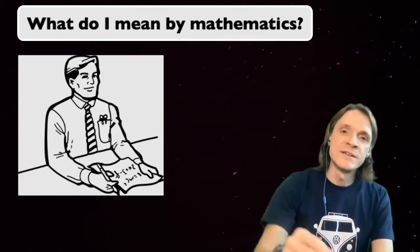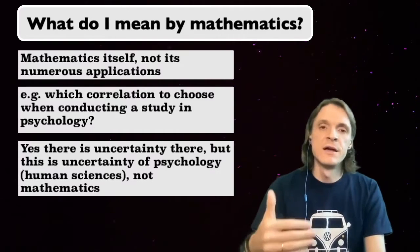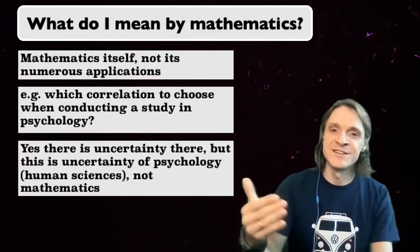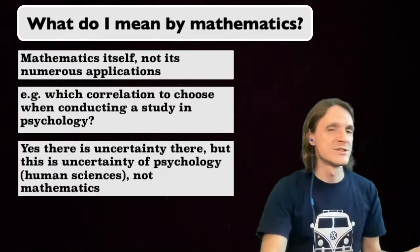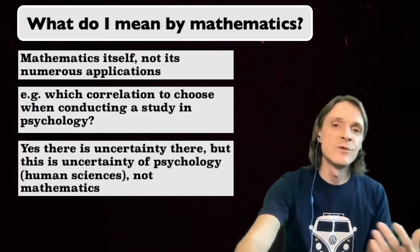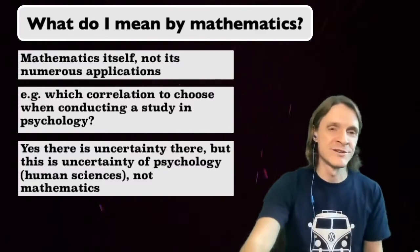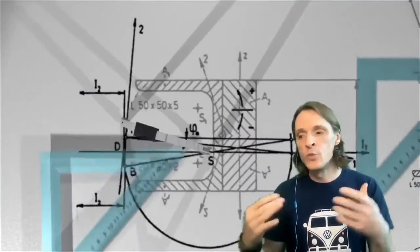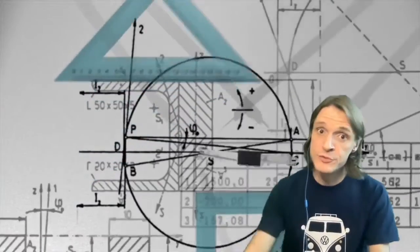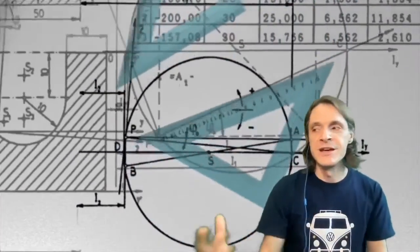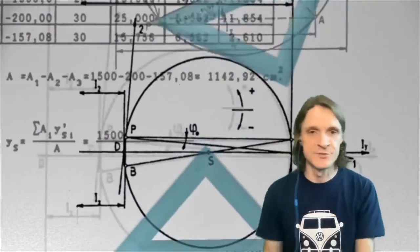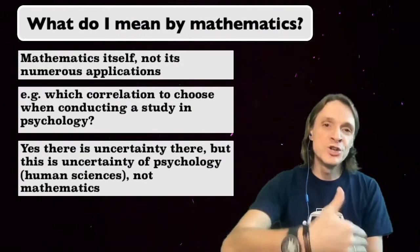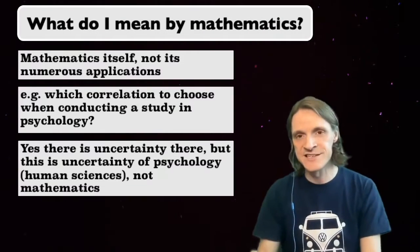Secondly, when I say mathematics, I mean mathematics itself and not its numerous applications. For example, I appreciate that statistical analysis can be used in human sciences to investigate social phenomena, and yes, there are many ways to compute a correlation and to interpret a correlation coefficient. There is not much certainty about which correlation coefficient to choose, which sample of participants to recruit, and how to interpret and generalize the results. However, it's not mathematics that is uncertain in this case, it's the human sciences that apply mathematical analysis as a tool.